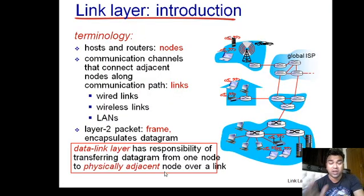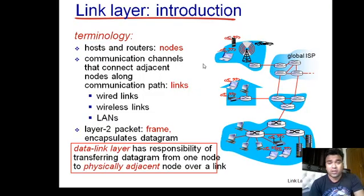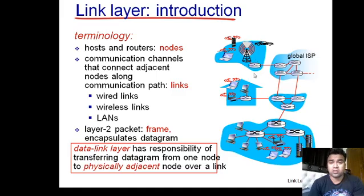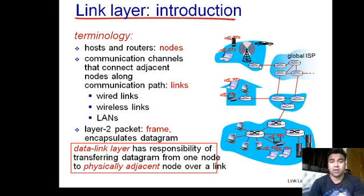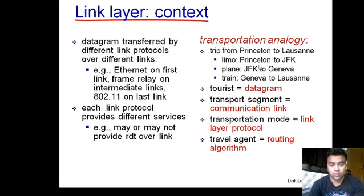The Data Link Layer delivers frames using MAC addresses, which are 48-bit physical addresses hard-coded on the network interface card. This address can be found on end systems. For routers, if a router has four serial ports, it has four network interface cards and four MAC addresses. Each serial port has both an IP address and a MAC address.